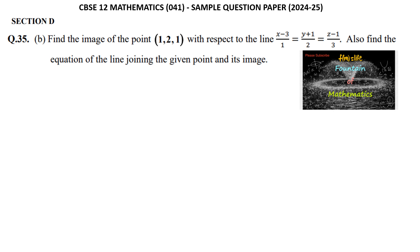We need to find the image of the point (1, 2, 1) with respect to the given line: (x − 3)/1 = (y + 1)/2 = (z − 1)/3. Also find the equation of the line joining the given point and its image.